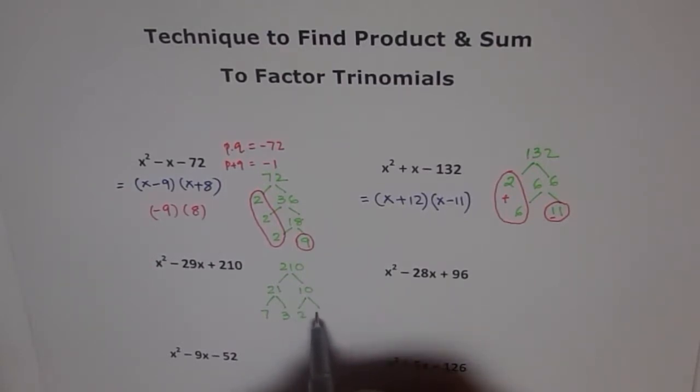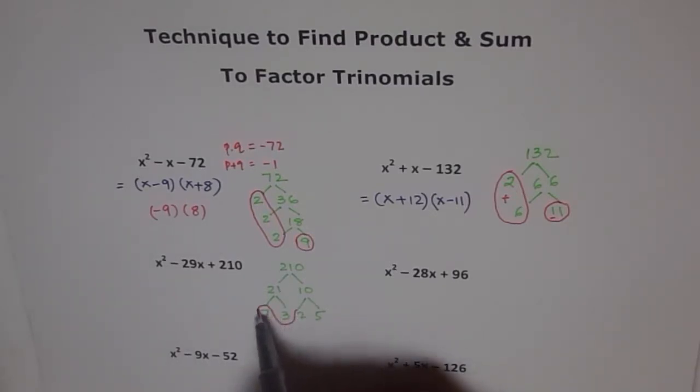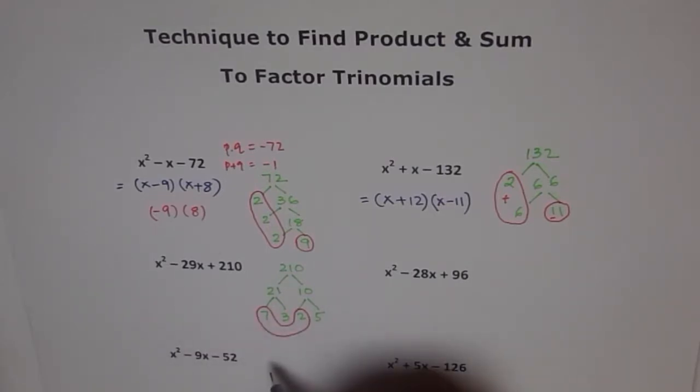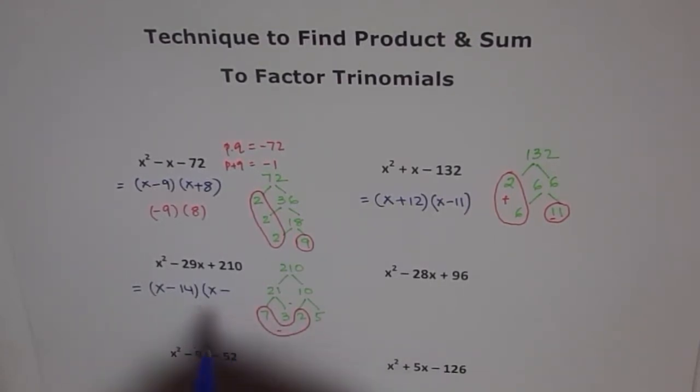10 can be written as 2 times 5. So now, you can see a combination here. If I do 2 and 7, I get 14. And the numbers left are 5 times 3 is 15. 14 plus 15 is 29. If I take them both negative, I get minus 29. And that's how this factoring process helps me. So I can now write this as x minus 14 times x minus 15. I hope you have started appreciating the whole process. It is a sure shot method to get the right answer. Otherwise, trying on calculator, finding out numbers may be very tedious.